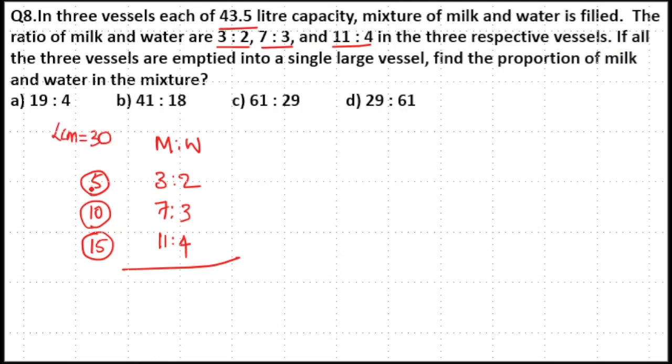So this is 5 parts. To make it equal 30, multiply first ratio with 6. And 10 into 3 is equal to 30, so multiply second ratio with 3. 15 into 2 is equal to 30, so multiply third ratio with 2.